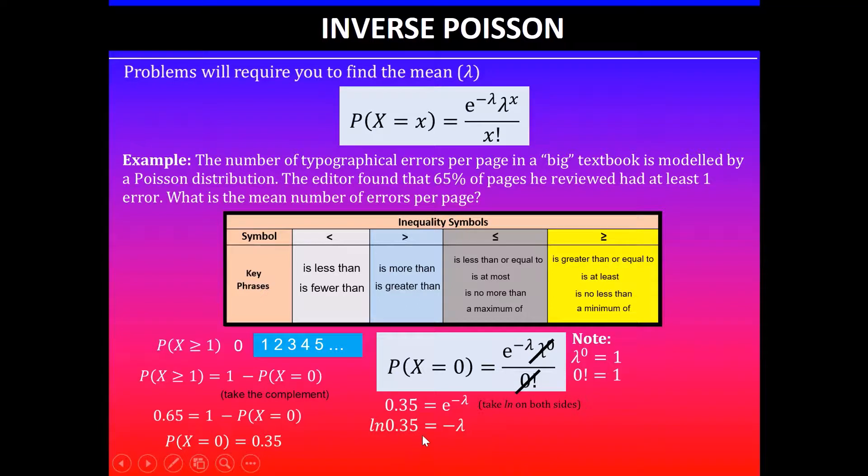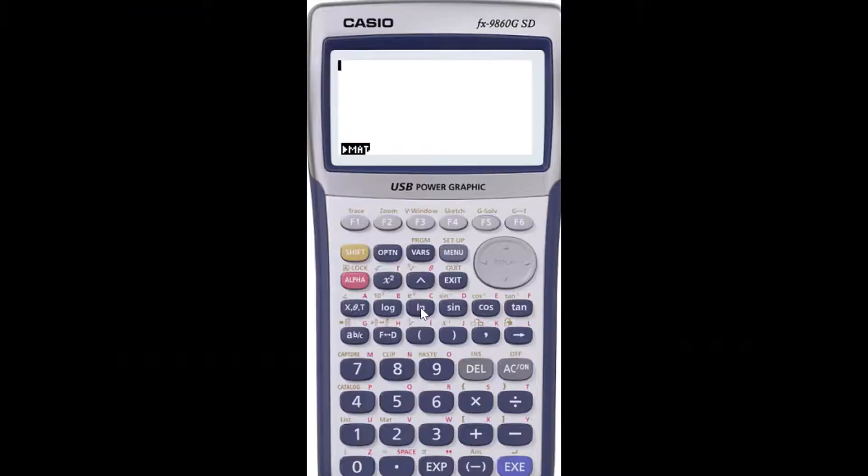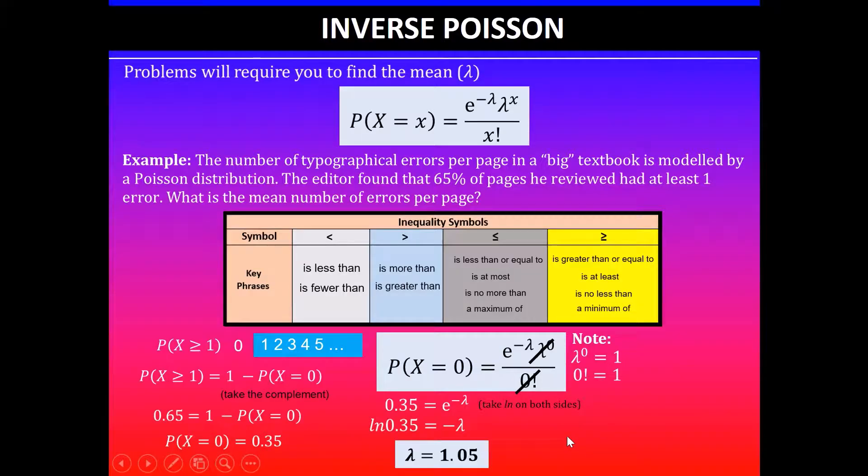That will give you ln 0.35 is equal to minus lambda. ln and e are inverse functions, they'll cancel out. ln 0.35 gives you negative lambda, and then this negative will cancel out. You'll see that it's the same as 1.05, which is our lambda value.